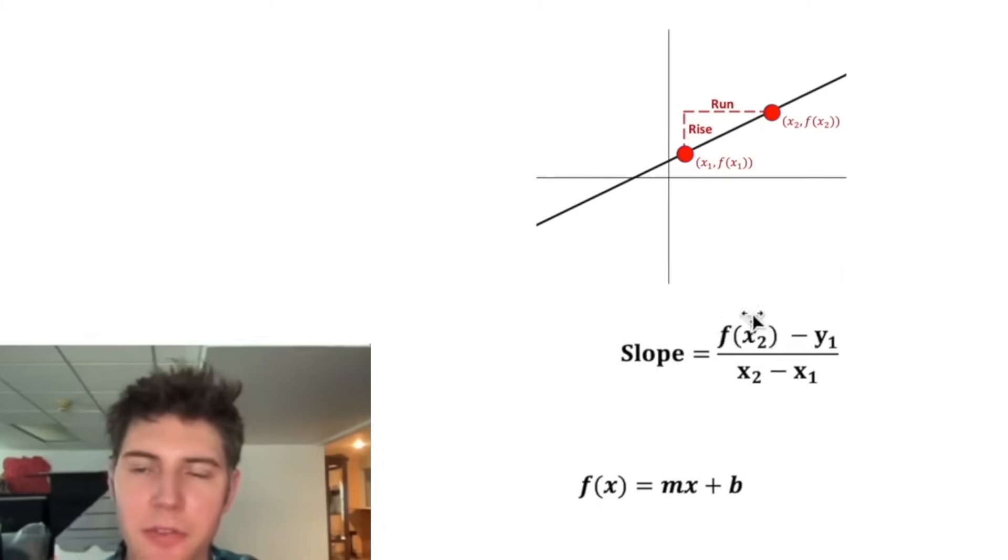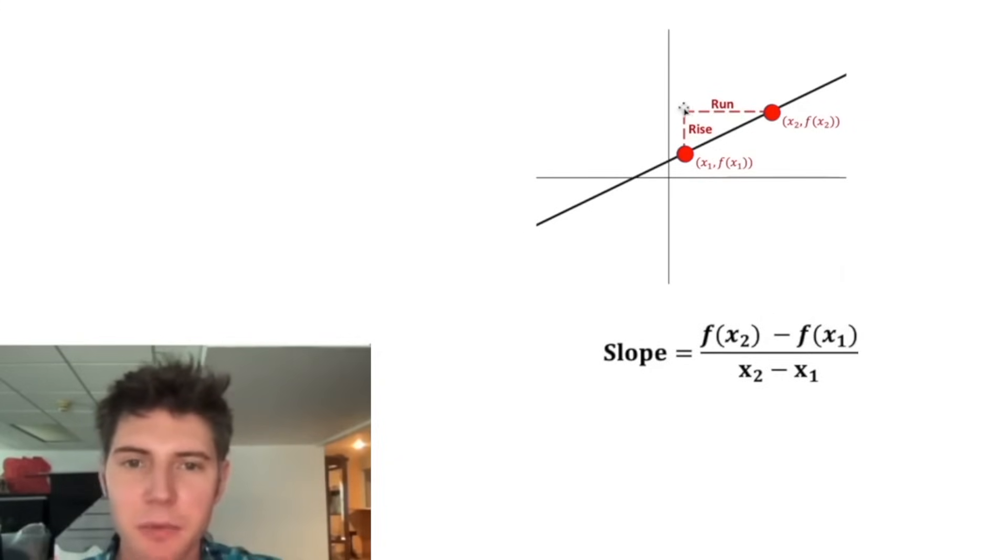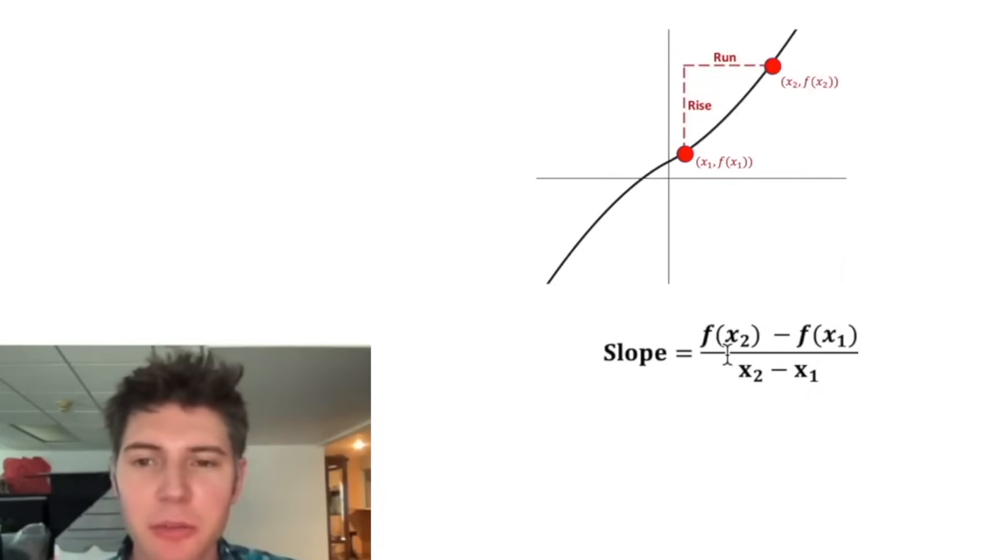And we can also change our slope. Instead of y sub two, let's make it f of x sub two minus f of x sub one. So it's the exact same thing. We're measuring the rise over run using function notation. Instead, we can now do things that aren't lines. And now that we're not dealing with straight lines anymore, it's no longer called a slope. It's an average rate of change.